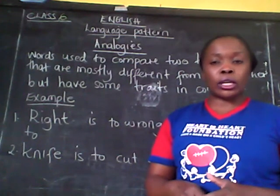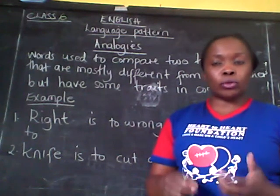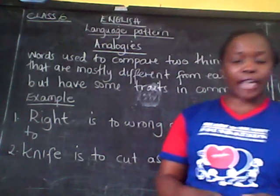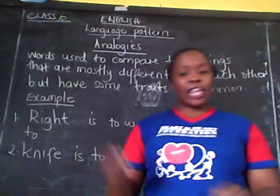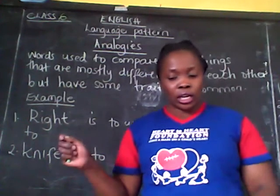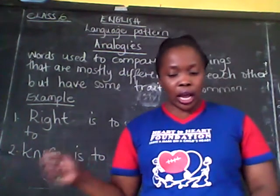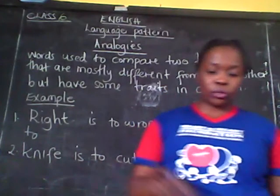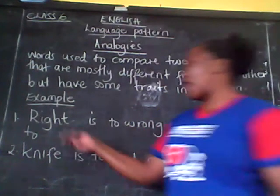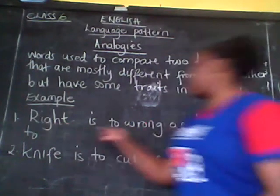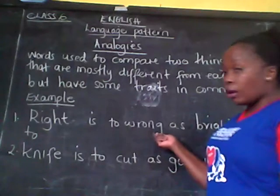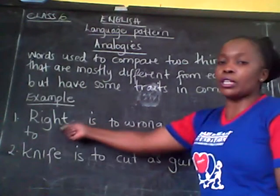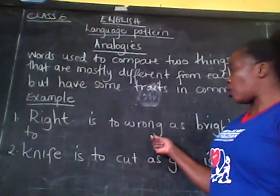As we use analogies, we use words like 'is to' and then 'as', and then 'as to' is used. Like here: right is to wrong. You can compare the relationship between right and wrong.